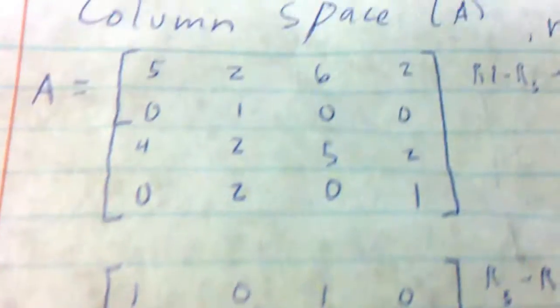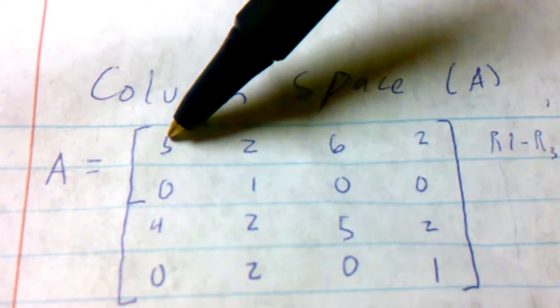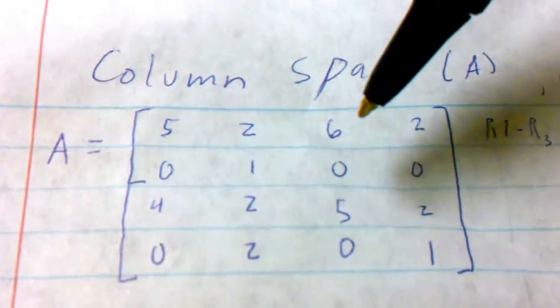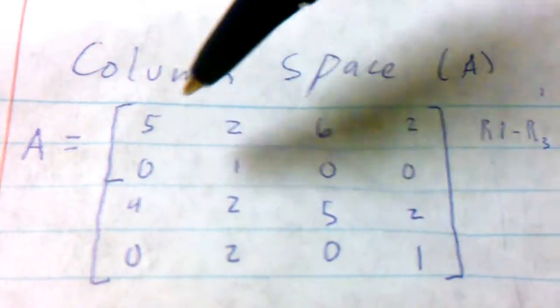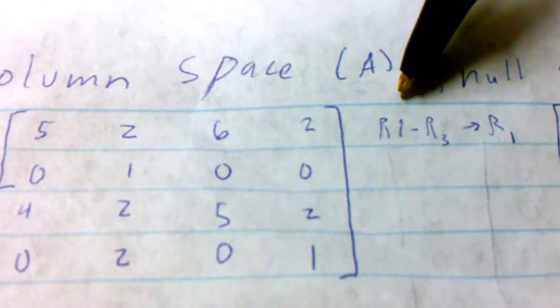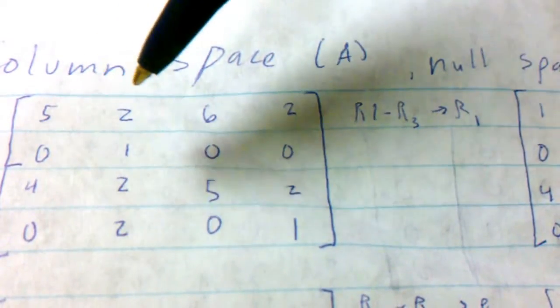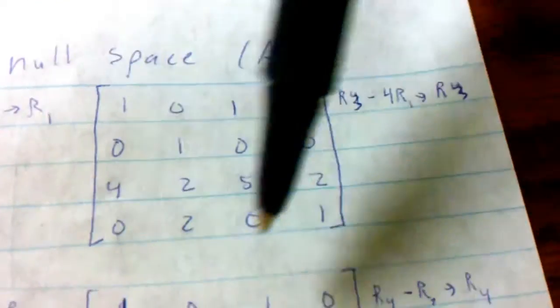So we're going to start with row-reducing, and for our row-reduce, we will be getting 1s. For each of these, they're 1s below the 0s, and we'll see how it works out. So we're going to start off with row-1 minus row-3 would give us row-1. So 5 minus 4, 2 minus 2, 6 minus 5, 2 minus 2, to give us this new vector.